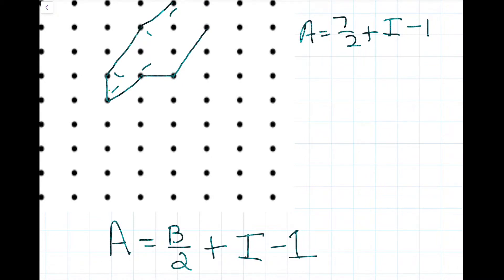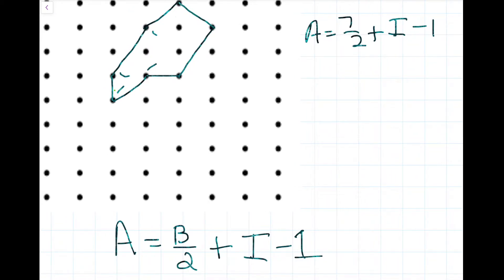And we can just erase these, and now the interior points. It is quite easy to tell that there are only 3 interior points: 1, 2, 3. So area equals 7 over 2, which is equal to 3.5, plus 3 minus 1. The area is 6.5 minus 1, and that is equal to 5.5.